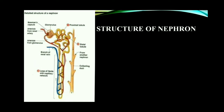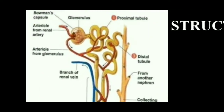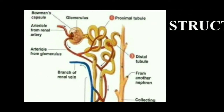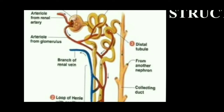Let us study the structure of nephron. This is the structure of nephron. Each nephron has mainly two parts: renal corpuscle and renal tubule.